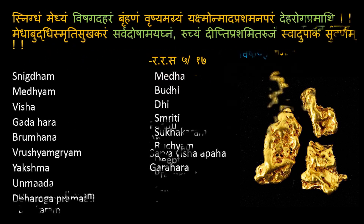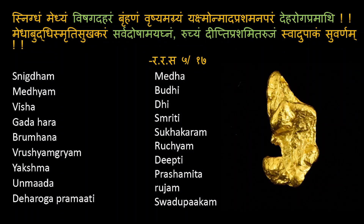Another reference from Rasaratna Samuchaya, 5th chapter, speaks about Snigdham, Medhyam, Vishagadharam, Bhrumhanam, Vrushyamaghram, Yakshma Unmadha Prashamanam, Deha Roga Pramathi, Medha, Buddhi, Smruthi, Sukakharam, Sarva Dosha Amayagnam, Ruchyam, Deepti Prashamitham, Arujam, Svadupakam for Suvarnam. Among these, important for Suta Shekhar Rasa are: Vishagadharam to remove toxins — add Swarna Bhasma; Gadahara for disease affected individuals; and if a person is suffering from Roga, add Suta Shekhar Rasa. Sarva Dosha Amayagnam addresses Doshik unequilibrium in all three Doshas.